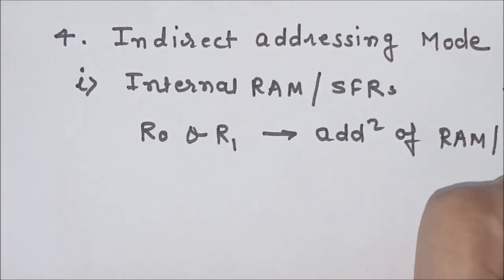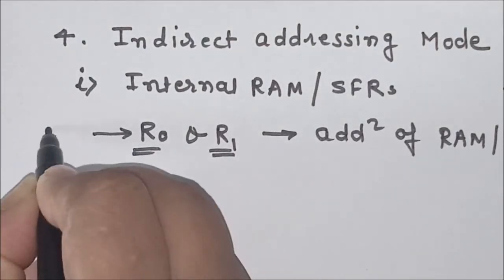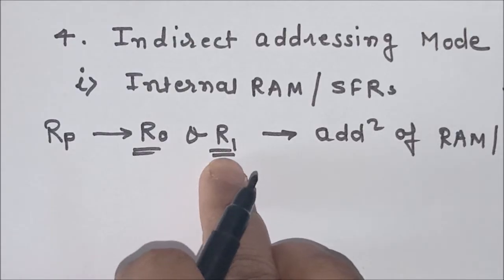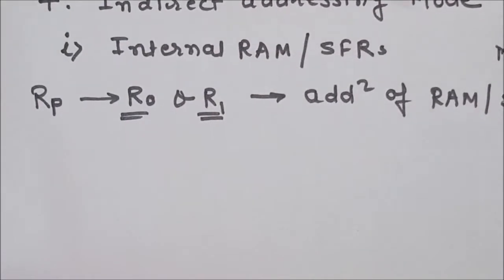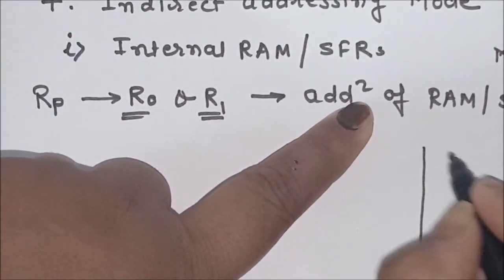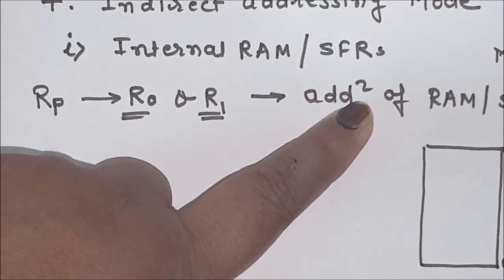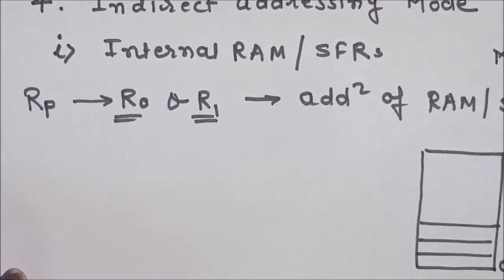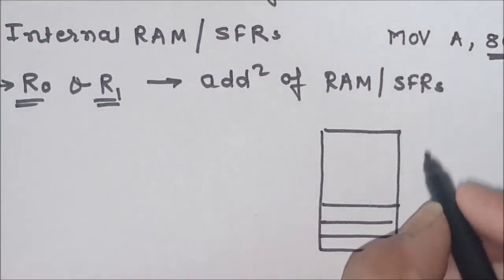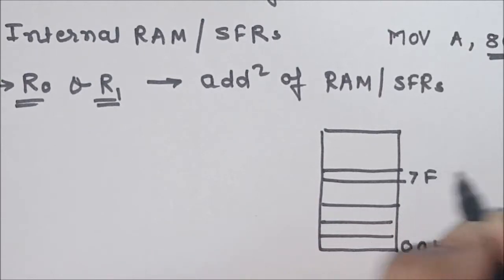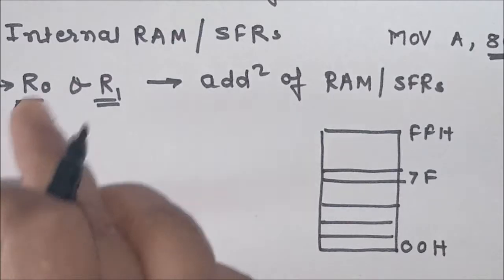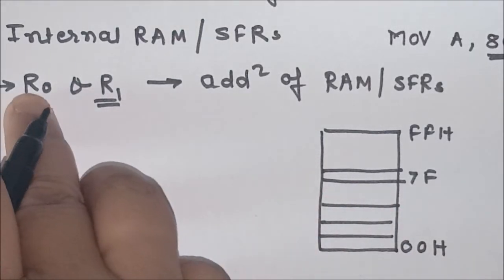Only registers R0 and R1 can be used to store the address of internal RAM or SFRs. This can be written in an instruction as RP, where you mention whether you want to use R0 or R1 — that means this register R0 or R1 is used as a pointer to a memory location. The internal RAM address starts from 00H, the last address of internal RAM is 7FH, and up to FFH we have SFRs. We have to store the address of a memory location in register R0 or R1.